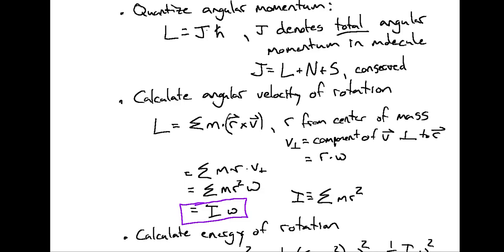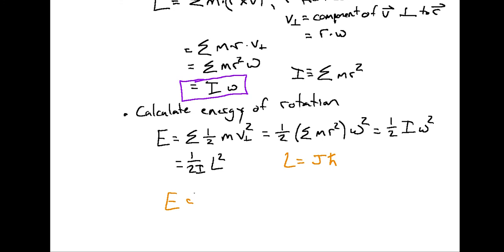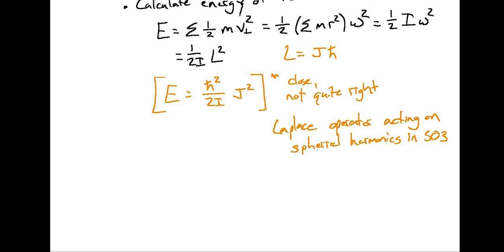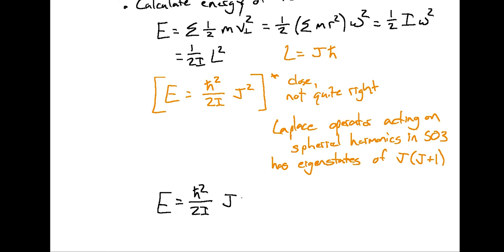We've quantized angular momentum in units of j·ℏ, so plugging that in for L gives E = ℏ²j²/(2I). However, this is close but not quite right. Quantum mechanically, the energy operator — the Laplace operator acting on spherical harmonics in the algebraic group SO(3), the space of rotations in three-dimensional space — has energy eigenstates of j(j+1), not j². With this fix, the actual rotational energy is E = ℏ²j(j+1)/(2I).